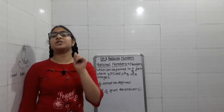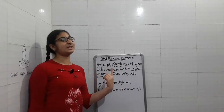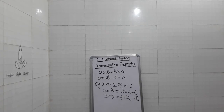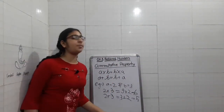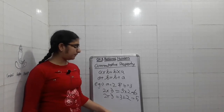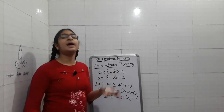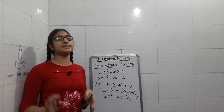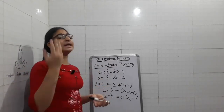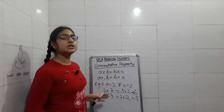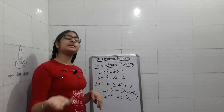Let's go to our properties. The first property is the commutative property. In commutative property, A into B equals B into A — if you multiply A into B or B into A, the answer is the same. In the case of addition, A plus B equals B plus A, which is also the same.